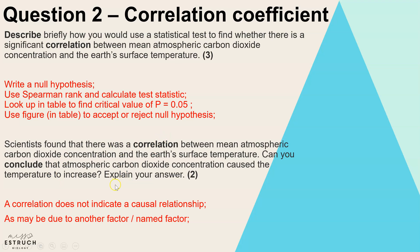Whenever there's a correlation a common question is: does that prove causation? A standard phrase to remember is correlation does not prove causation. Just because there was an association — that as carbon dioxide increased the temperature increased — that doesn't prove carbon dioxide was the only or sole cause of that temperature increase. The second mark is for pointing out it could be due to another factor, for example other greenhouse gases such as methane.